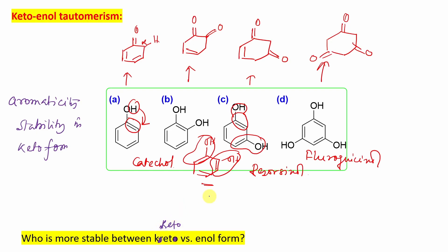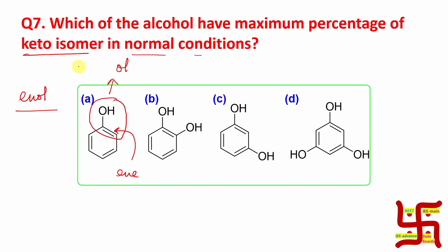Obviously the keto form is more stable overall, because C=O is more stable compared to the enol's C=C–OH. So equilibrium generally prefers to remain on the keto side. But in the case of phenol, converting to keto form gives stabilization from one carbonyl, but destroys aromaticity. So for phenol, the enol form is more stable.